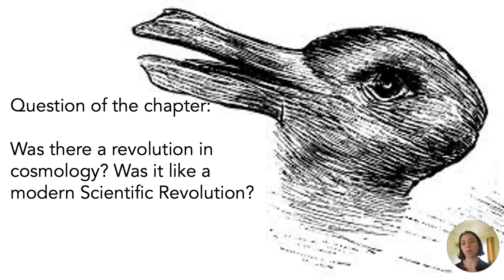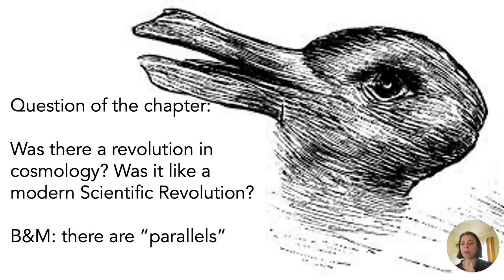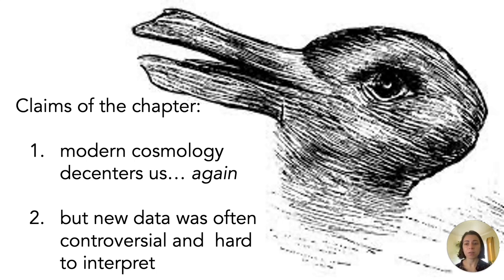The main question this chapter asks is: was there a revolution in cosmology akin to the scientific revolution? In what ways might this revolution have been like the scientific revolution we studied back in week one? The authors, Ballarin-Morris, argue that there are certain parallels we can draw between what's going on in cosmology during this time and the scientific revolution. The first main claim is that cosmology de-centers us yet again — our galaxy, with respect to the entire universe.